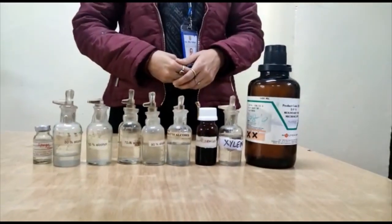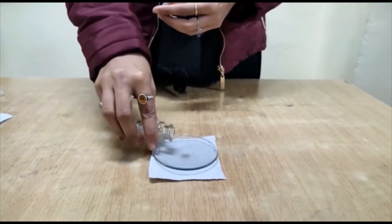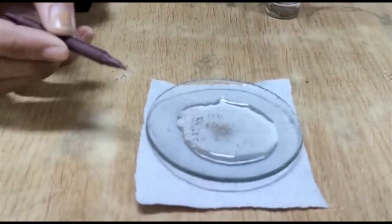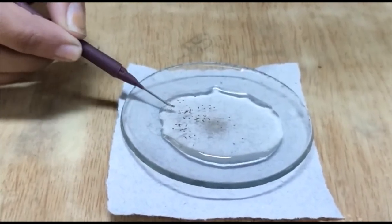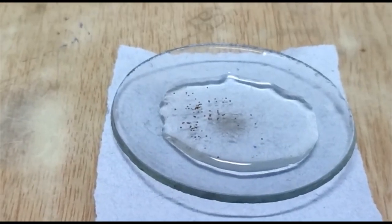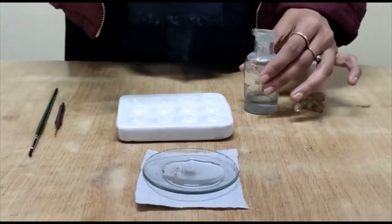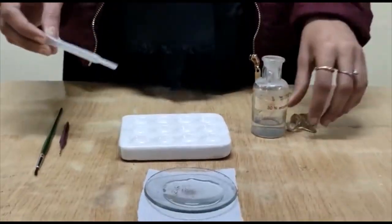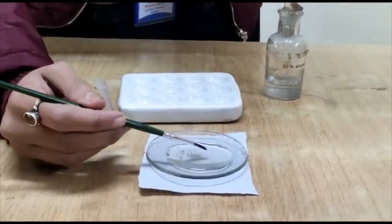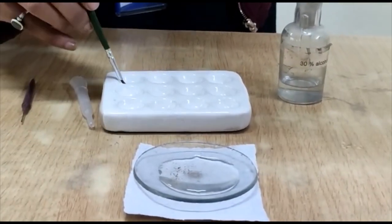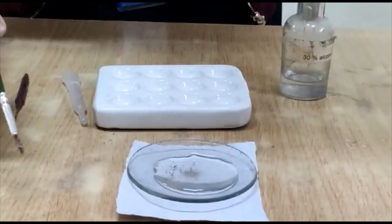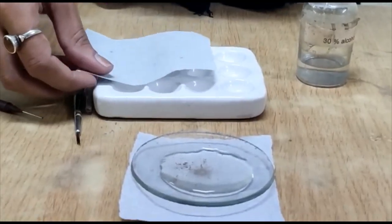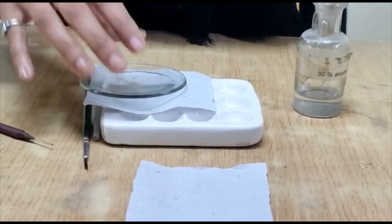Let's proceed. So first, we take our samples in the watch glass. As you can see here, these are the gemmules. These are the internal buds found in the sponges, some of the sponges. So first, we take some drops of 30% alcohol in our staining tray and transfer few gemmules in this 30% of alcohol. And finally, cover this alcohol with sample and wait for 5 minutes.